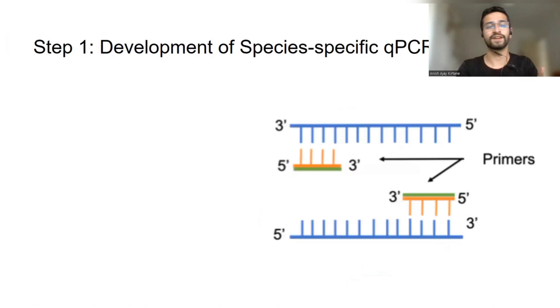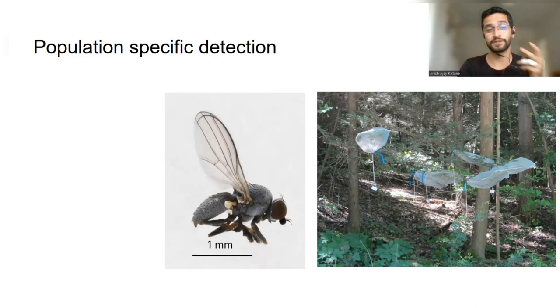So step one of approaching an environmental DNA study is to develop species-specific qPCR assays. We chose qPCR as the approach, and you develop these primers, which really are the search tools that help you identify the correct sequence of your target species. In this case, we also have to make population-specific assays for the two silverfly species, which I think is one of the first eDNA qPCR studies that has successfully targeted population-specific detection.